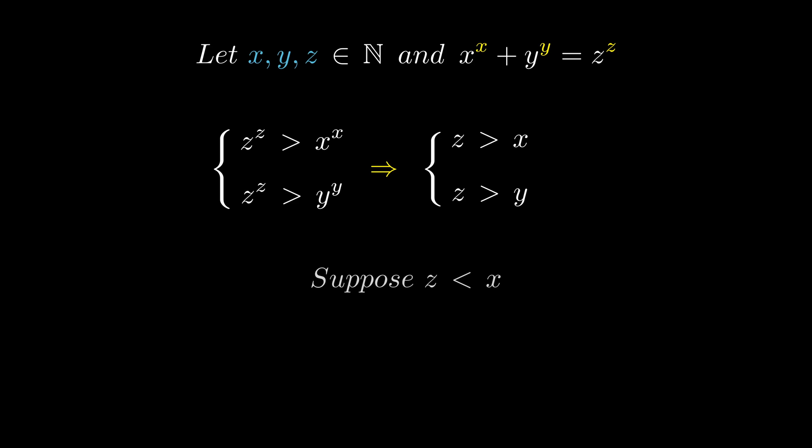To see it, why not use another contradiction? Raise both sides to power z, and since z is less than x, we can also write this. But it clearly contradicts the very first inequality we found. The proof is the same for y.